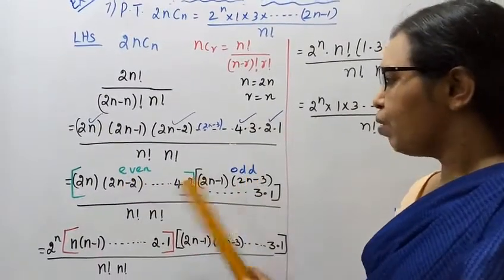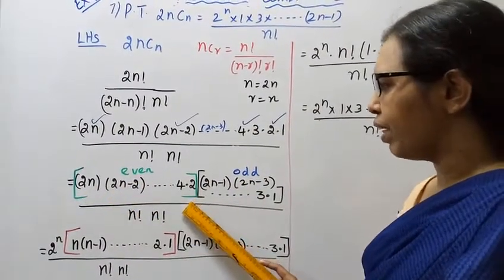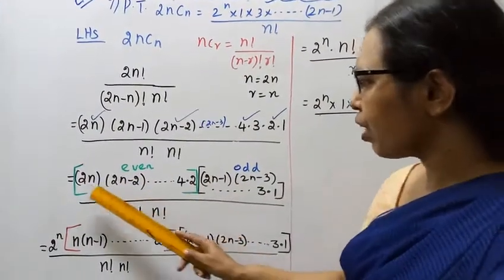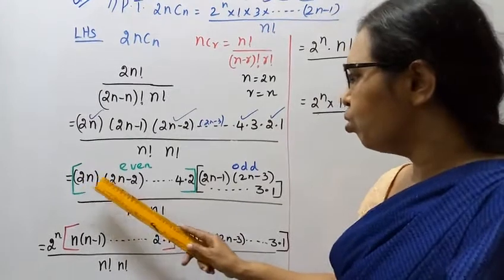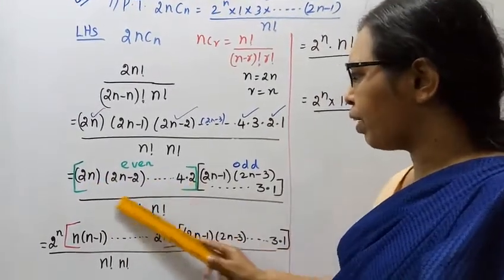Now for the even terms: from each even factor we can take out a 2, giving us 2 multiplied n times, which equals 2 power n. These 2s are factored out from each of the n even terms.